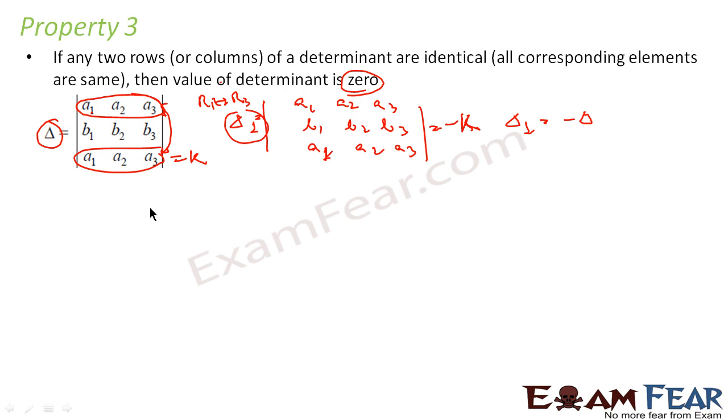And I'm saying this is equal to this. I am saying that k is equal to minus k. Why? Because this values k and this values minus k. Or I can say that 2k is equal to 0, or k is equal to 0.